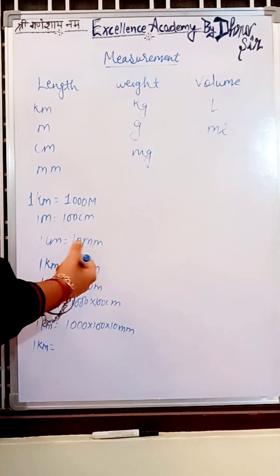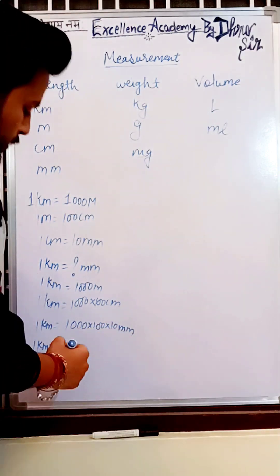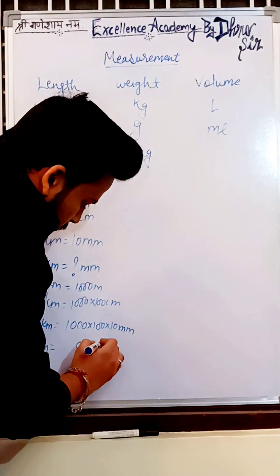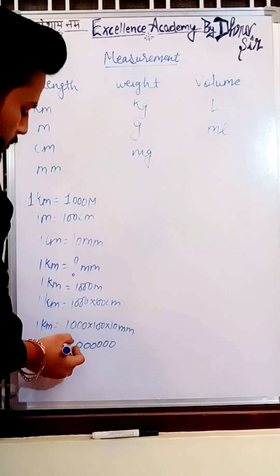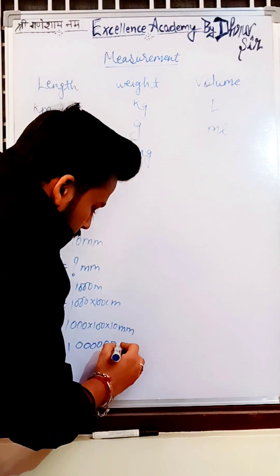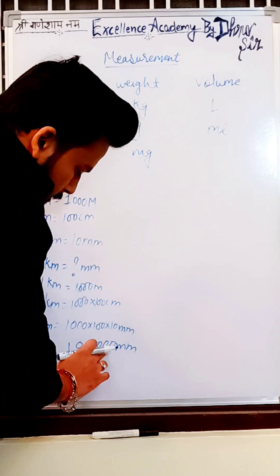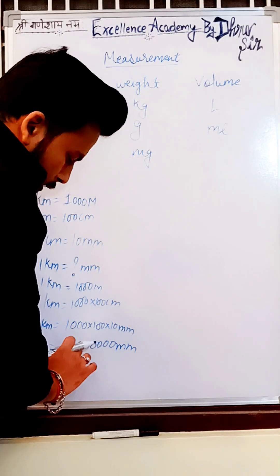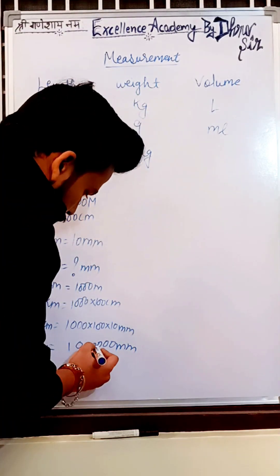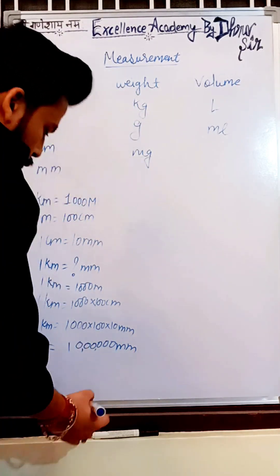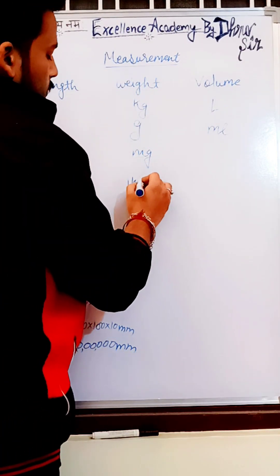When we multiply numbers ending with zeros, we count the zeros and multiply the rest. Here we get 1, 2, 3, 4, 5, 6 zeros — so the answer is 1 followed by 6 zeros. That means in one kilometer there are 10 lakh millimeters. You can also put a comma for clarity. So that was for length.